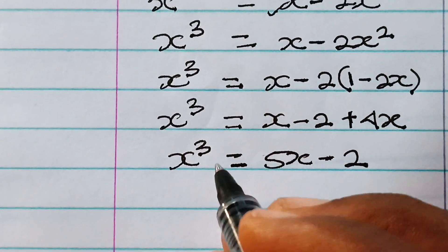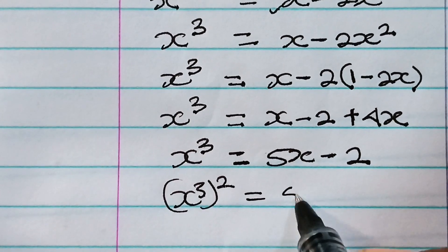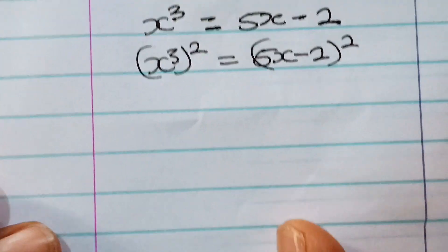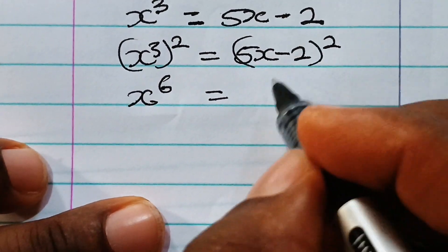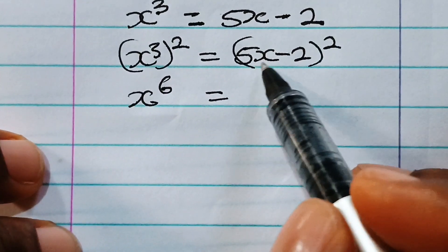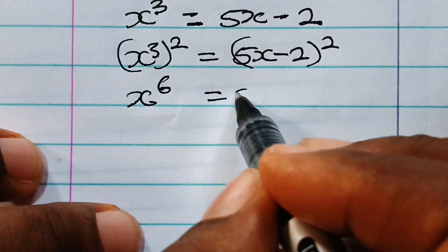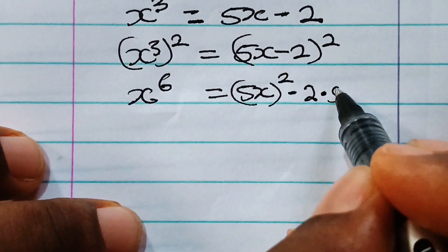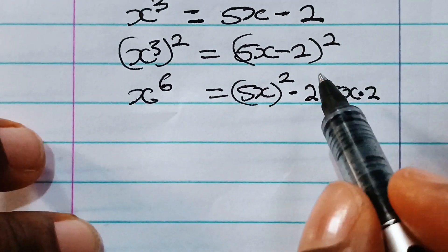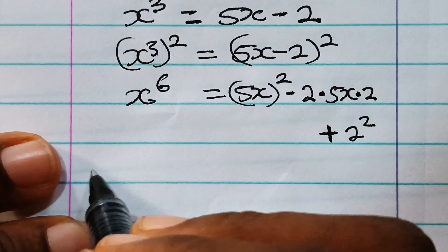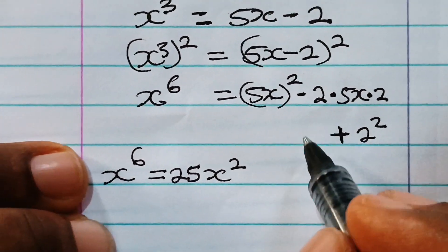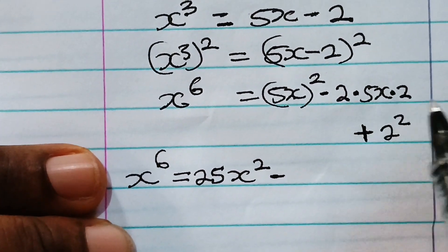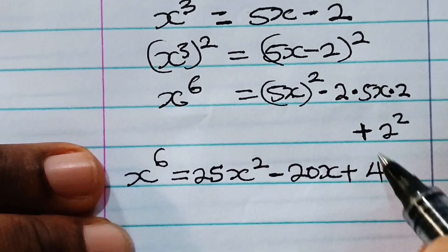Let's square both sides of this equation. So we have x to the power of 3 squared, which gives x to the power of 6, is equal to 5x minus 2 squared. Using a minus b squared equals a squared minus 2ab plus b squared: this gives us 5x squared minus 2 times 5x times 2, plus 2 squared. So x to the power of 6 equals 25x squared minus 20x plus 4.